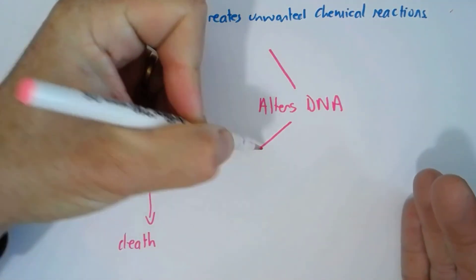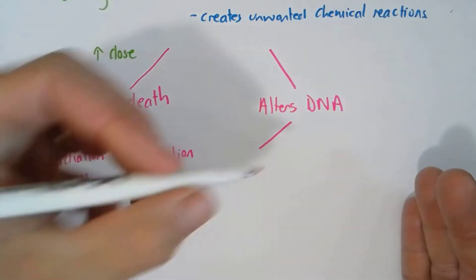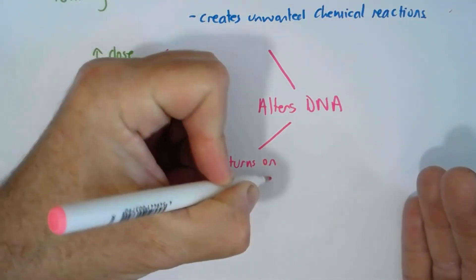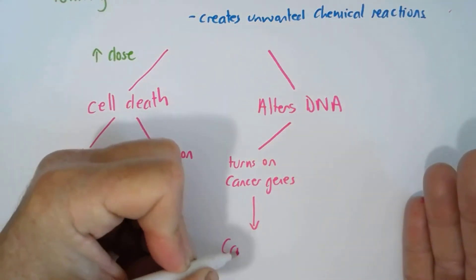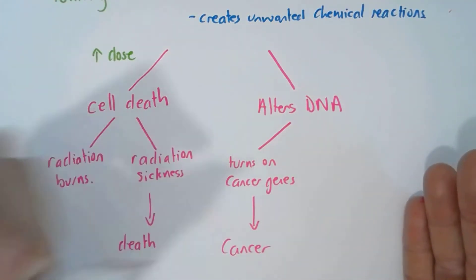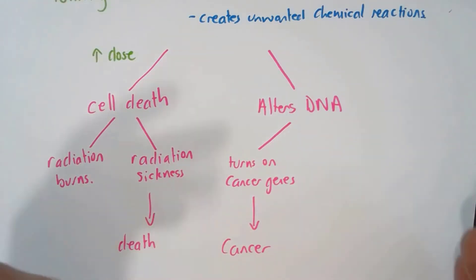It can actually turn on cancer genes. And of course ultimately if the cancer genes are turned on, it's going to lead to cancer. So exposure to ionising radiation can cause cancer.